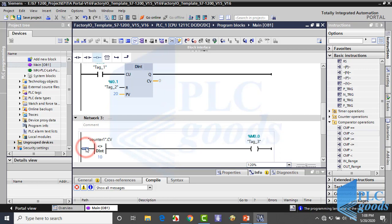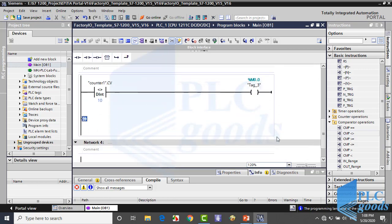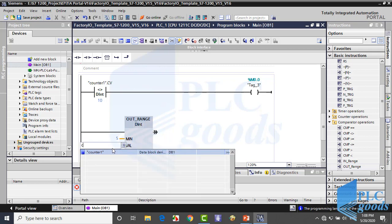Now let me assign an output for this line. Also let me use an out range instruction. Here I select double integer format. As you know, if I click here I can replace this with similar instructions like in range. Well, let me complete this line and test this program.